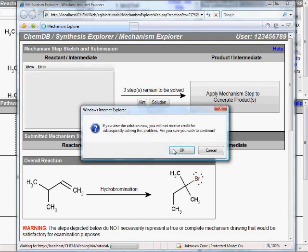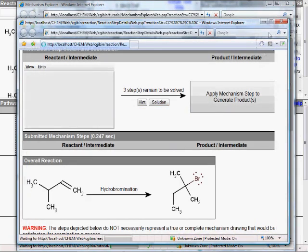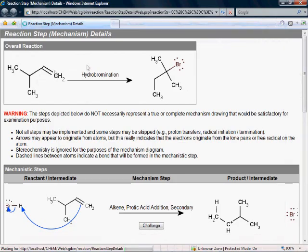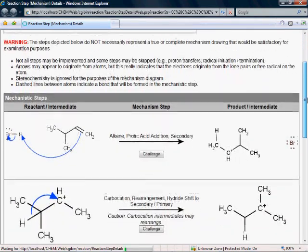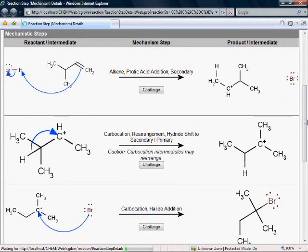I'm going to skip to the solution part for now, and what this shows us here is not only the overall reaction predicted by the system, but also a complete curved arrow mechanism diagram to show not only what the product of the reaction was, but to also explain how the reaction proceeded, including this step here. A hydride shift, carbocation rearrangement, it's the reason we got that unexpected product.